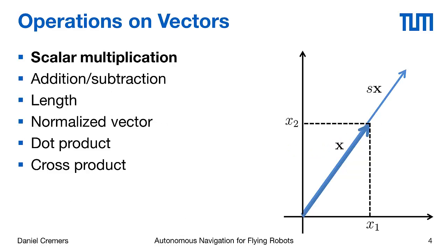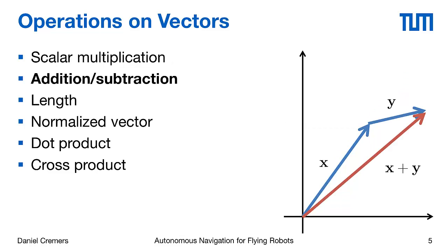Once we have vectors, we can define different operations on these vectors. We can define scalar multiplication, which simply means you multiply the vector x by a scalar s, and what you obtain is another vector that has the same direction as x but it is rescaled by the number little s. With two vectors x and y, we can define addition and subtraction of vectors.